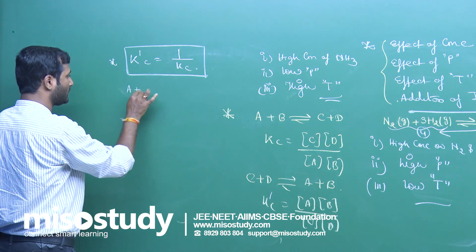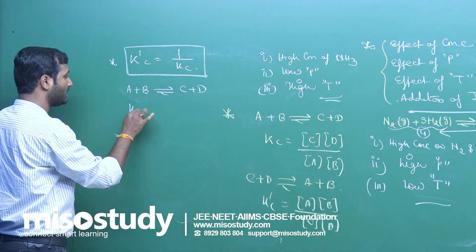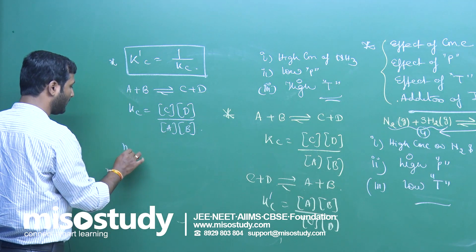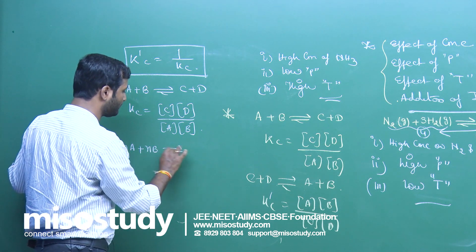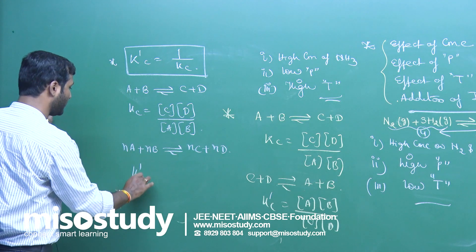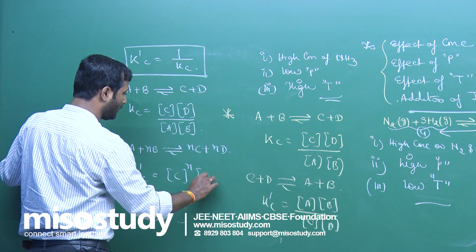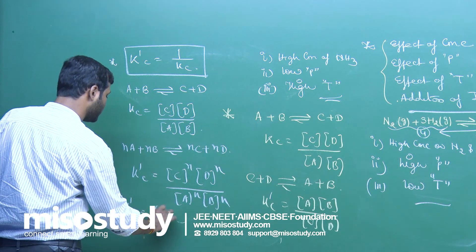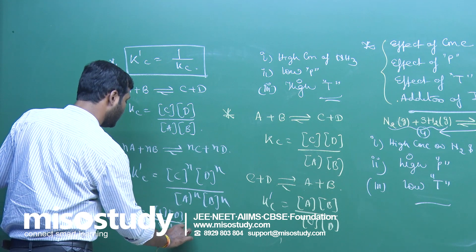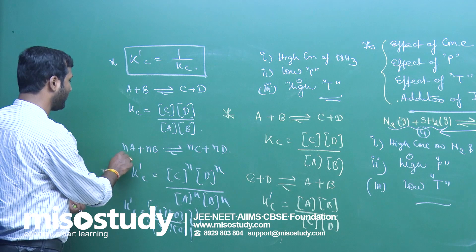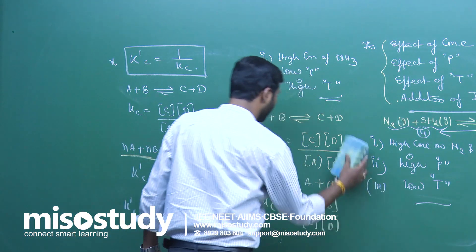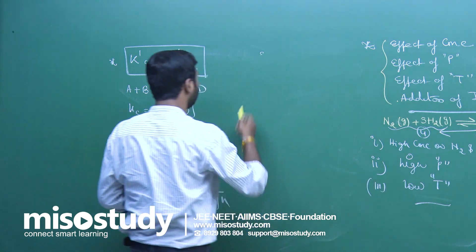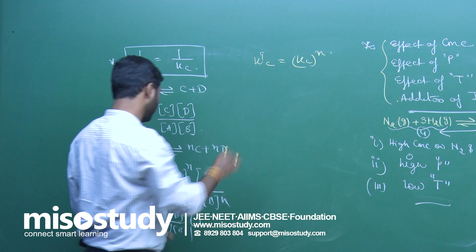If we take the equation A plus B gives C plus D and multiply by a factor N to get NA plus NB gives NC plus ND, the new equilibrium constant K'C equals [C][D]/[A][B] raised to the power N — that is, K'C equals KC^N. When we multiply by a factor, the new equilibrium constant is the original KC raised to that power.